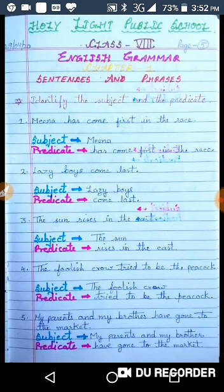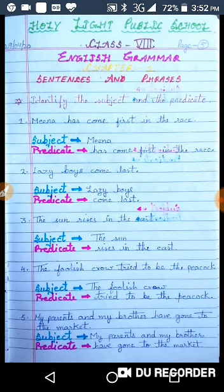What is predicate? The predicate may consist of one word or several words with the essential word being a verb. Predicate में verb essential होता है, जरूरी होता है और verb प्लस object मिलकर predicate बनाता है. इसी पर based exercise हम करते हैं.